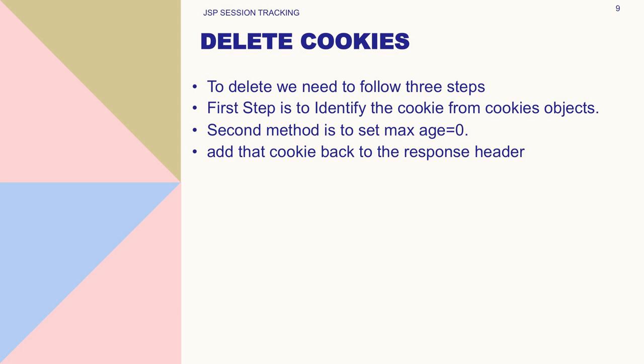Now we will learn how to delete cookies. To delete cookies, follow three steps: first, identify the cookie and store it in a cookie object — basically read the cookie as we learned in the previous slide. Second, set the max age equal to 0 using the setMaxAge() function — this is the main step where we do the actual deletion work. Third, add that cookie back to the response header as done previously. So deleting cookies means not deleting it from the system, but expiring the cookie and making it unusable.